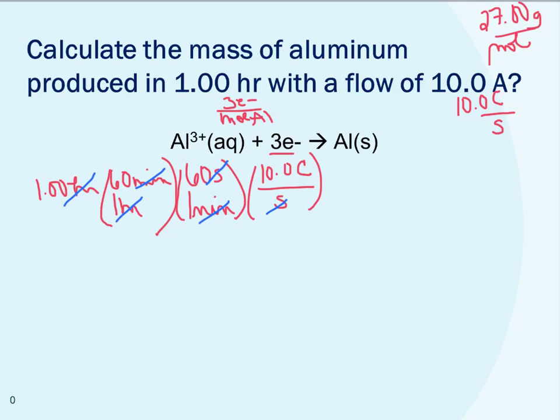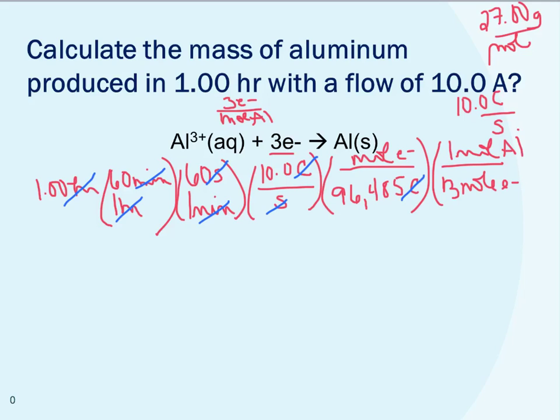Now I'm going to use my Faraday's constant, which I know is 96,485 coulombs per mole of electrons. So now coulombs cancels with coulombs. Now I've got moles of electrons. And I know that for every three moles of electrons, I have one mole of aluminum. And I'm running out of room, so we're going to bring it down here. And so I can see that moles of electrons cancels with moles of electrons.